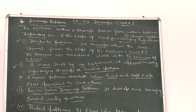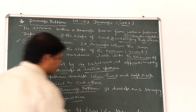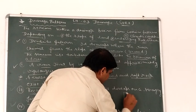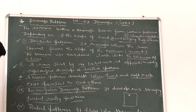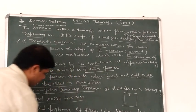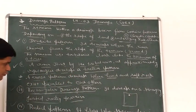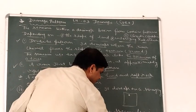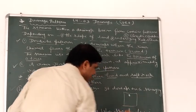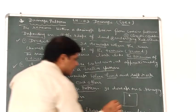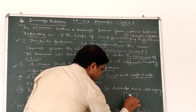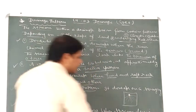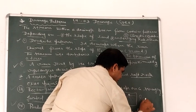This kind of pattern is called radial pattern. When streams flow in different directions from a central peak or high peak, this is called radial pattern.